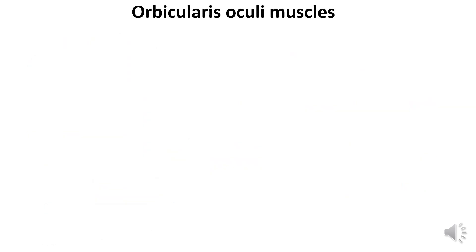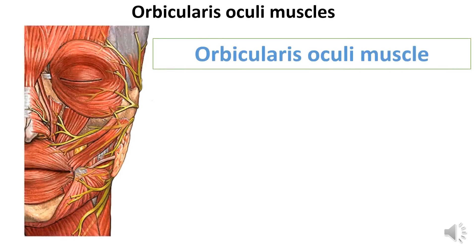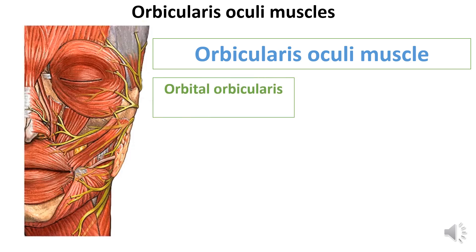The orbicularis oculi muscle is elliptical, lying under the skin in the thickness of the eyelids and around the entrance to the orbit. The muscle consists of three parts. The orbital part: the outer part of the muscle begins on the nasal part of the frontal bone, the frontal processes of the upper jaw and medial ligament of the eyelid, going in concentric arches to the outer corner of the eye.